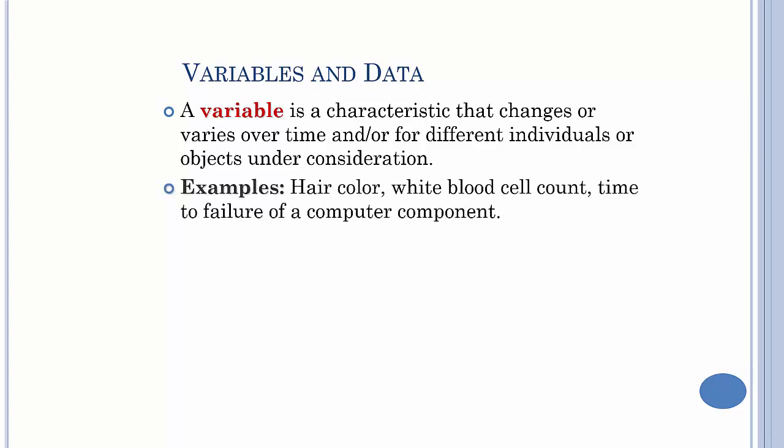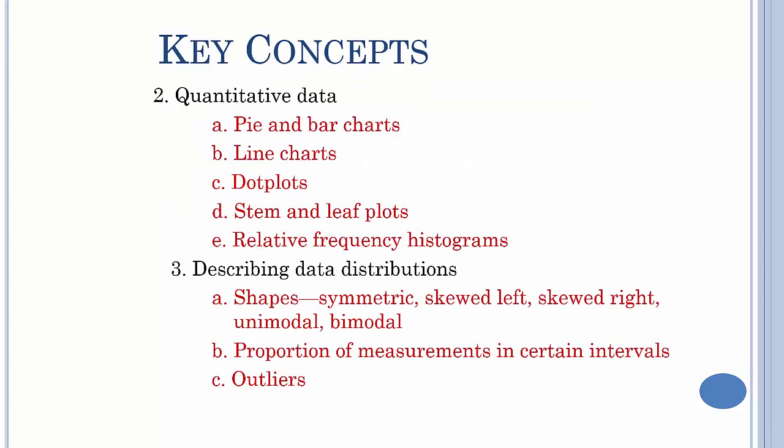A simple example: hair color, your blood cell count, the time it takes for something to fail, your income, all these different types of things.